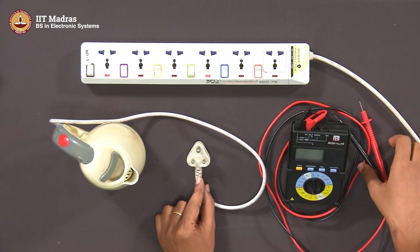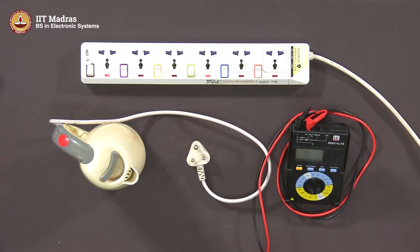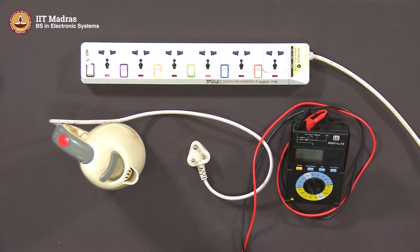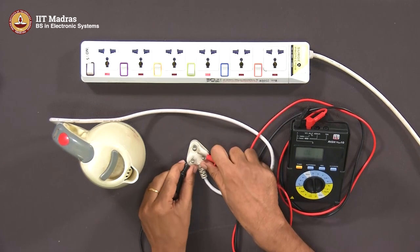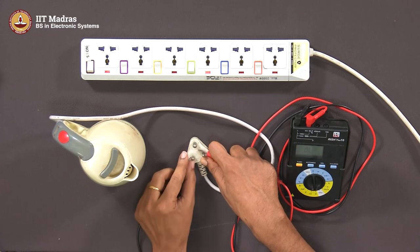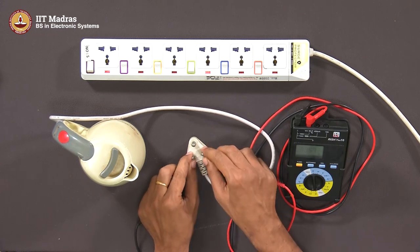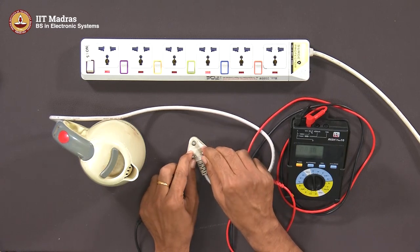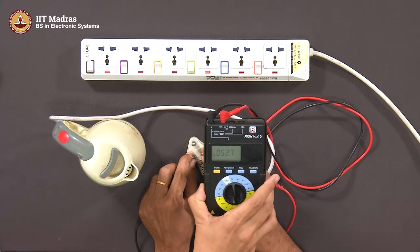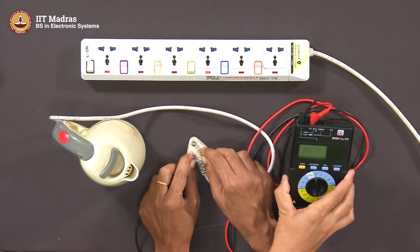Let me put this in ohm. I have shorted it, it is almost zero resistance. Okay. Yeah, it is 52.7. It is about 52.7.